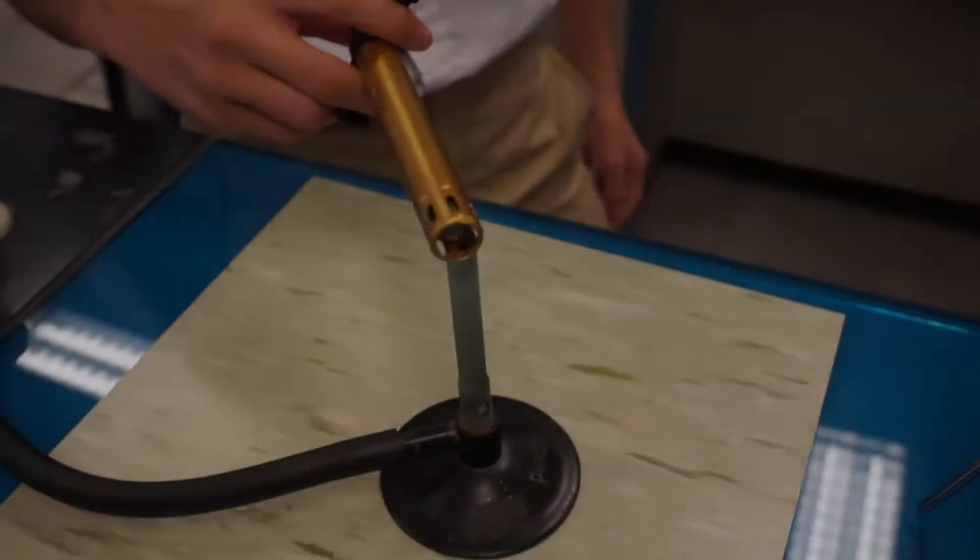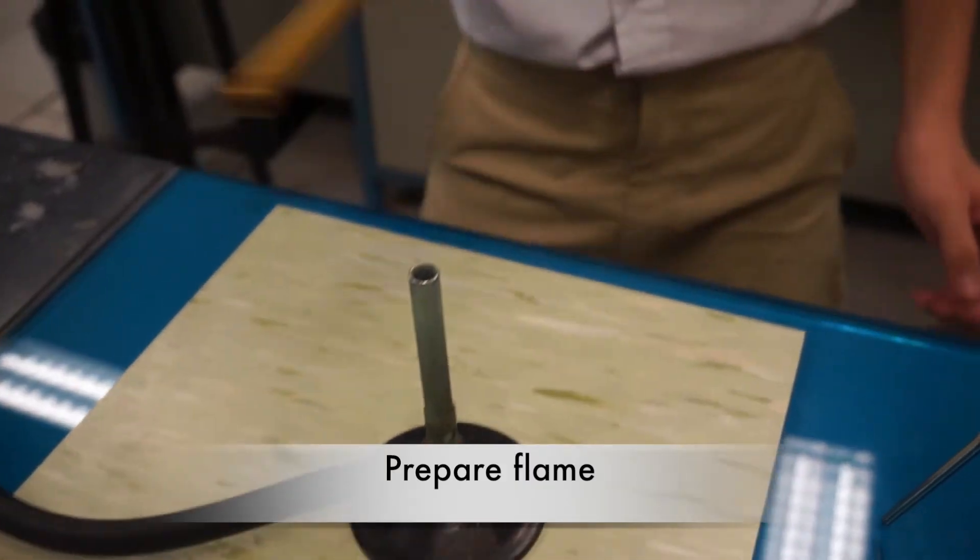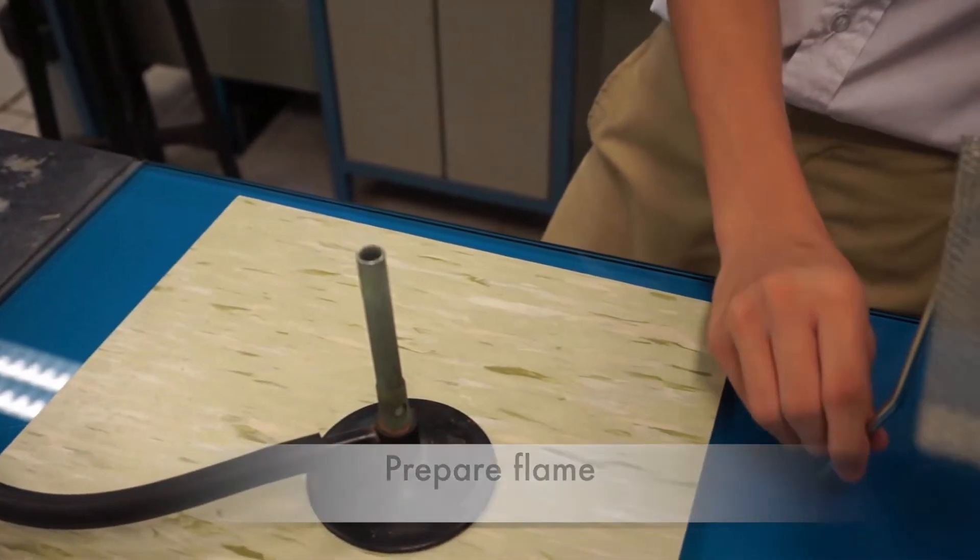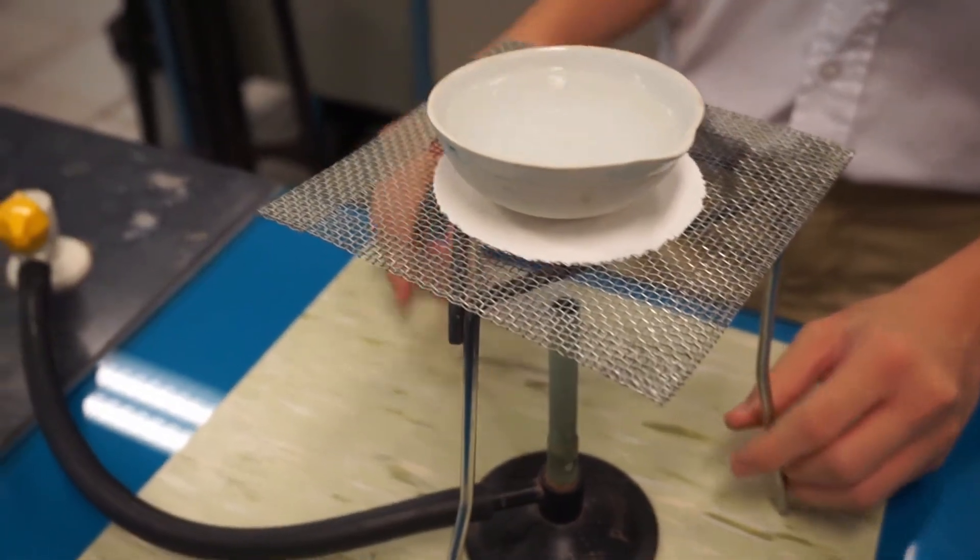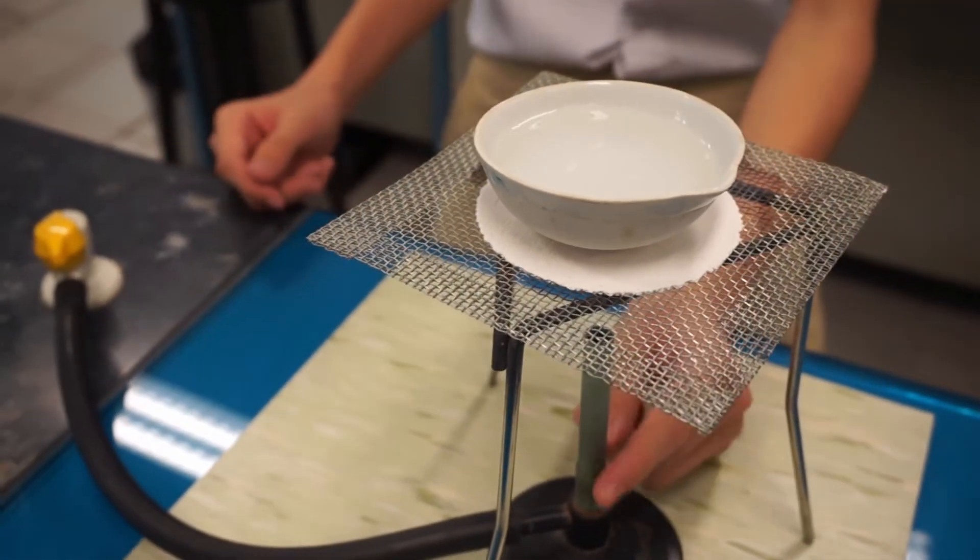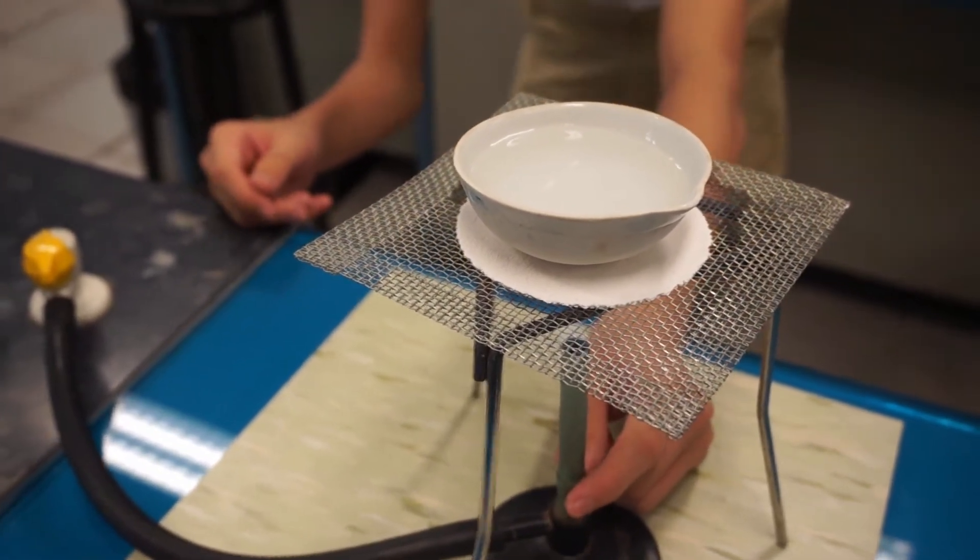Now we will light up the Bunsen burner. Make sure the air hole is closed before this. Next, carefully place the tripod stand over the Bunsen burner. Lastly, you may open the air hole to enhance the flame. The last part, waiting.